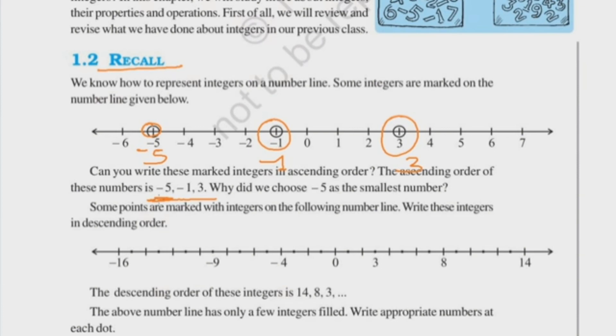Some points are marked with integers on the following number line. See, below is a number line, some numbers are marked there. Write these integers in descending order. Now we have to arrange the numbers on this number line in descending order, meaning greatest to smallest. So see, the descending order of these integers is 14, 8, 3. Tell me what comes next - minus 4 will come, then minus 9, then minus 16. Got it? Greatest to smallest.